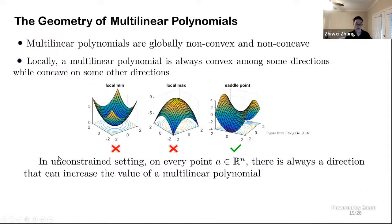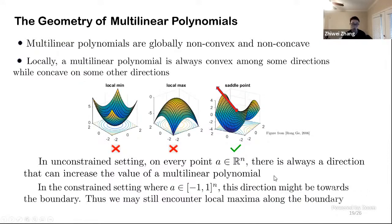But saddle shape is not the worst thing in search because we have a great chance of escaping from it. Formally speaking, if we do not apply our box constraints, on every point there will always be a direction where we can increase the value, the polynomial value. But if we impose our box constraints, then this escaping direction may be towards a boundary. So we may still encounter local maxima along the boundary. Or in other words, local maxima should be on the boundary. This kind of reveals the discrete nature of our framework despite of its continuous appearance.